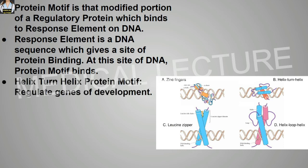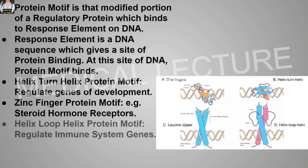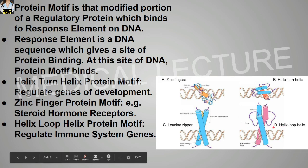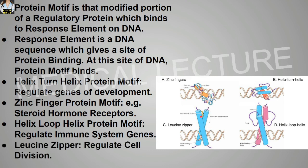The first protein motif is the helix-turn-helix, which regulates genes of development. Next is the zinc finger protein motif, with steroid hormone receptors as an example. Then the helix-loop-helix protein motif, which regulates immune system genes. Finally, the leucine zipper, which regulates cell division.